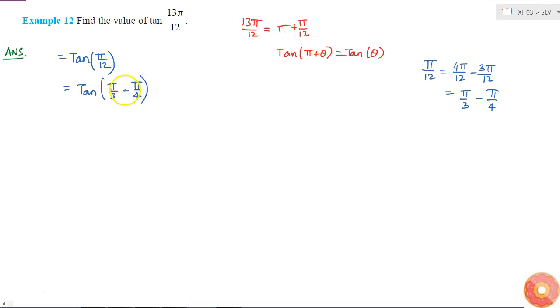So now I know the trigonometric identity: tan of A minus B is equal to tan A minus tan B divided by 1 plus tan A into tan B. This is the trigonometric identity.